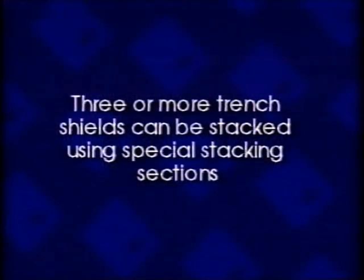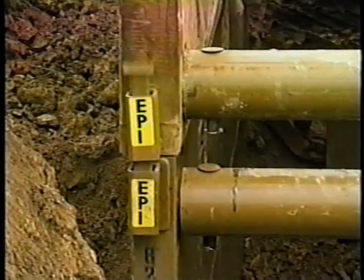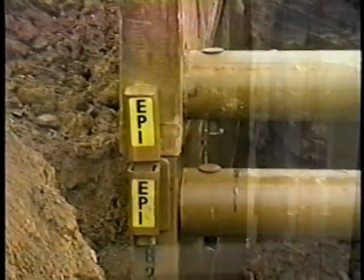Three or more trench shields can be stacked using special stacking sections. First, place your first trench shield down into the trench, knife edge down. Lower the special stacking section onto your bottom shield and put the stacking pins in place. Then lower the top shield into position, knife edge up, and put the stacking pins in place. You are now ready to install deep pipe.